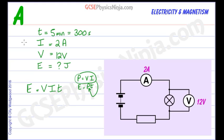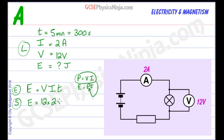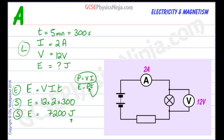So that's the second stage in the calculation. The first stage was to list the data, the second stage is to quote the equation, and the third stage is to put the numbers in. E equals 12 multiplied by 2 multiplied by 300 seconds, so E is equal to 7200 joules. The last stage is to state the answer with the correct unit — joules. That's the energy transferred by the power source to the lamp as heat and light: 7200 joules using the equation EVIT.